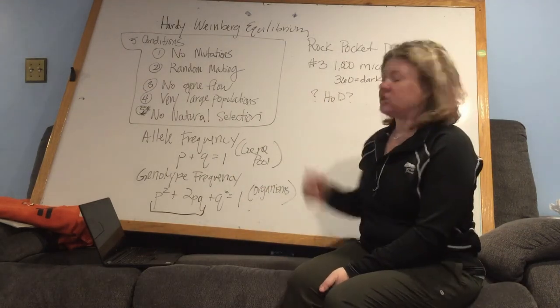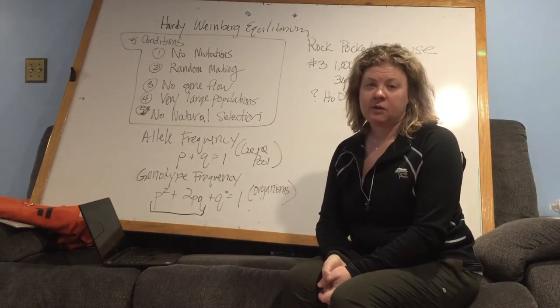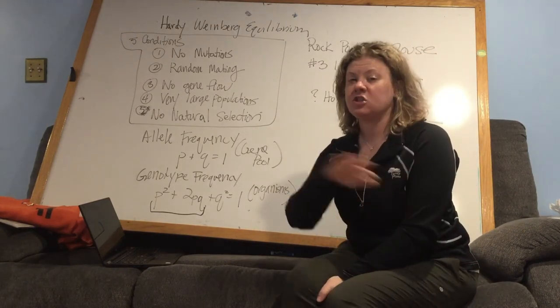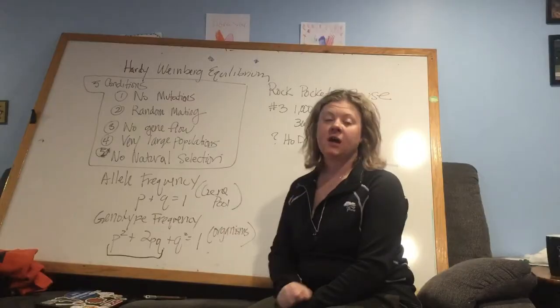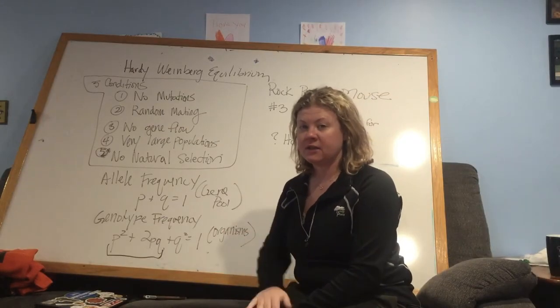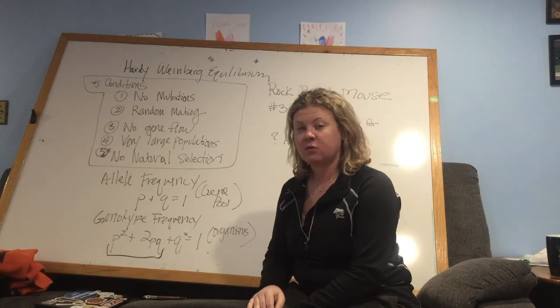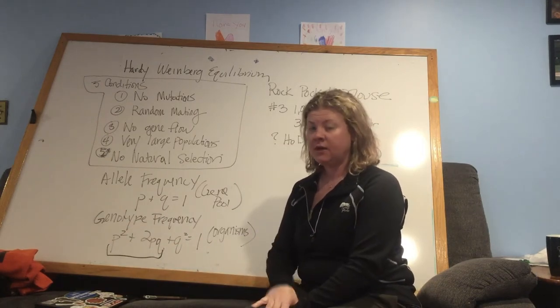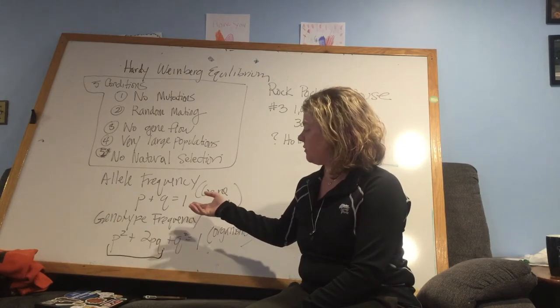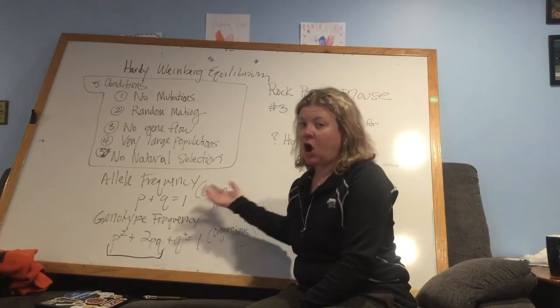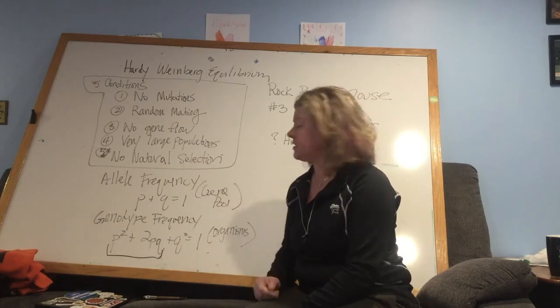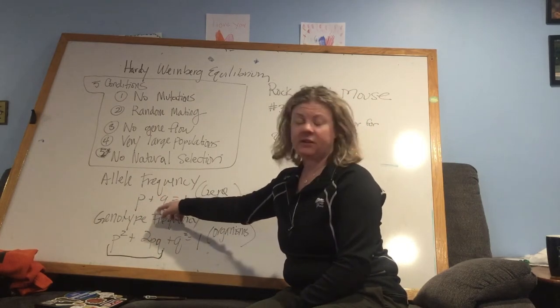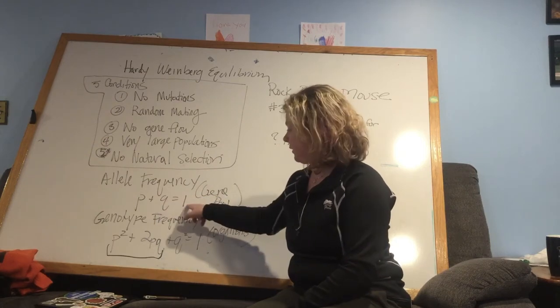We have two different equations that we're using for Hardy-Weinberg Equilibrium. The first is talking about the allele frequency. So we're looking at the gene pool as a whole. We're going to be talking about the total alleles in the population, not individual organisms. But if we combine all of their alleles into a gene pool, then we would see that all of the alleles add up to 100% of the alleles. Or since we're using decimals, all of the dominant alleles represented by P plus all of the recessive alleles represented by Q are going to equal one.